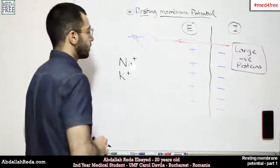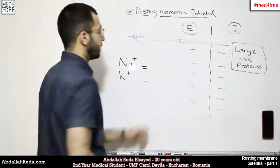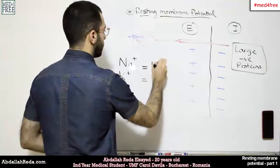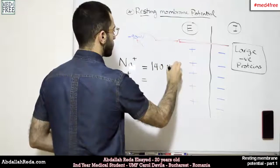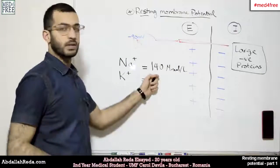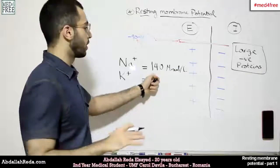Sodium on the outside is around 140 millimoles per liter. And these values can be in a range, like in some textbooks, maybe 142 and so on.